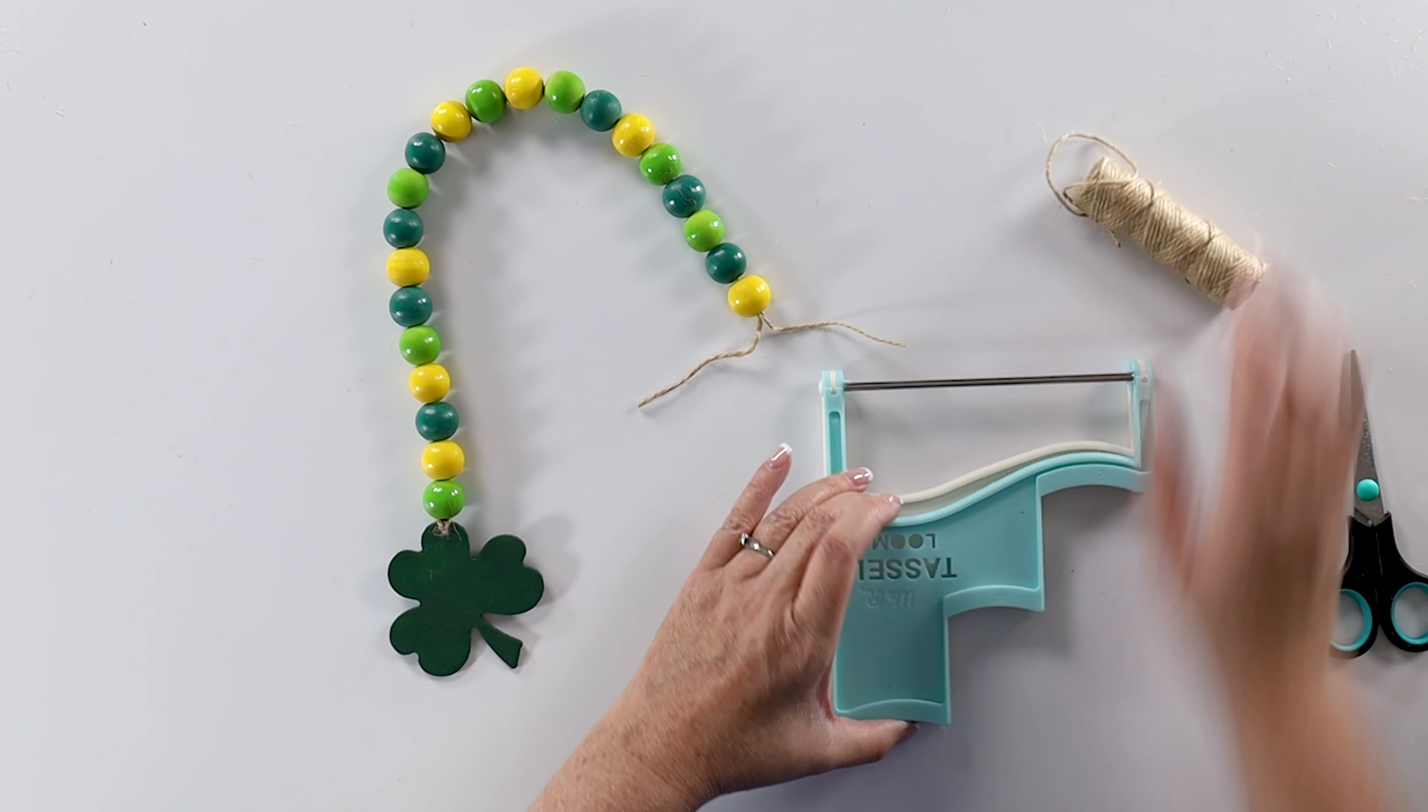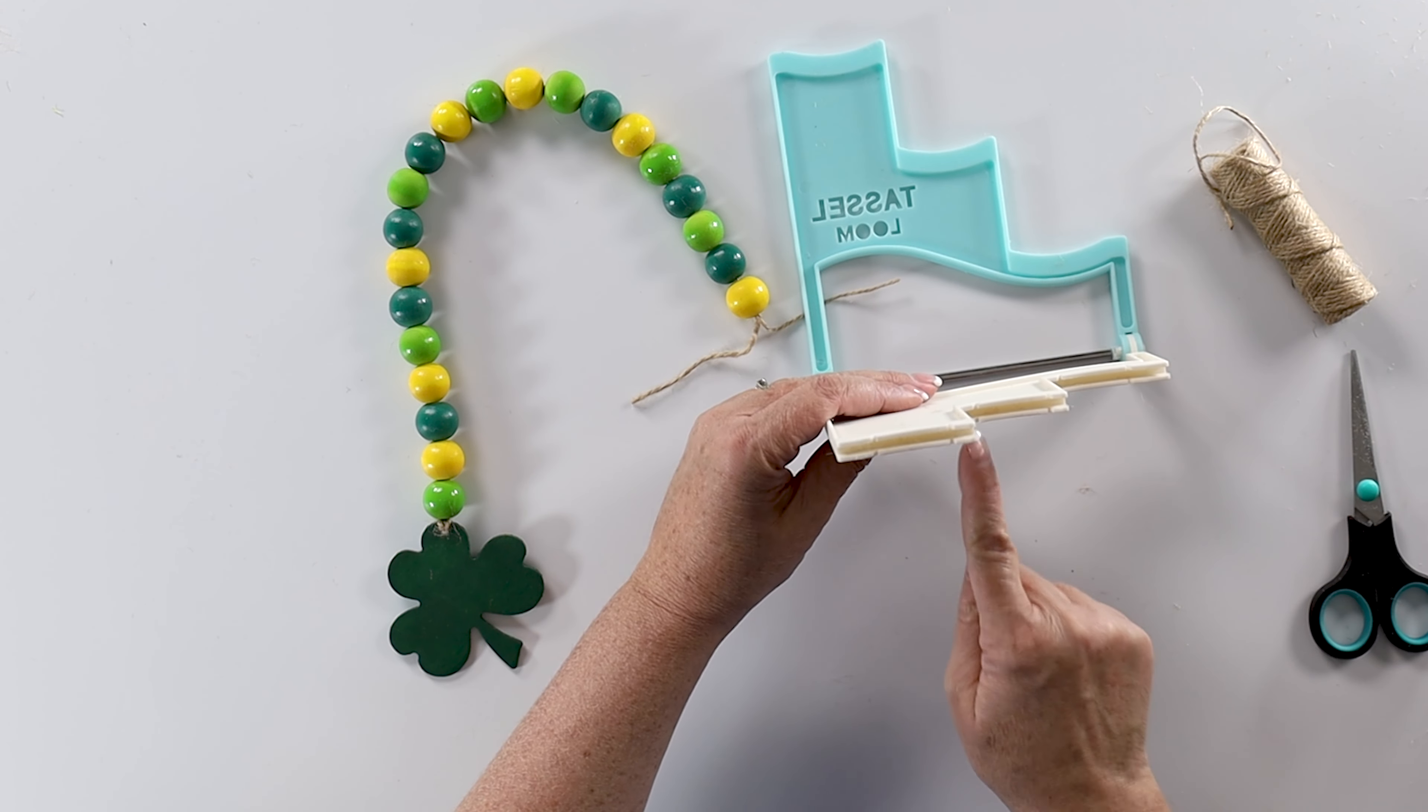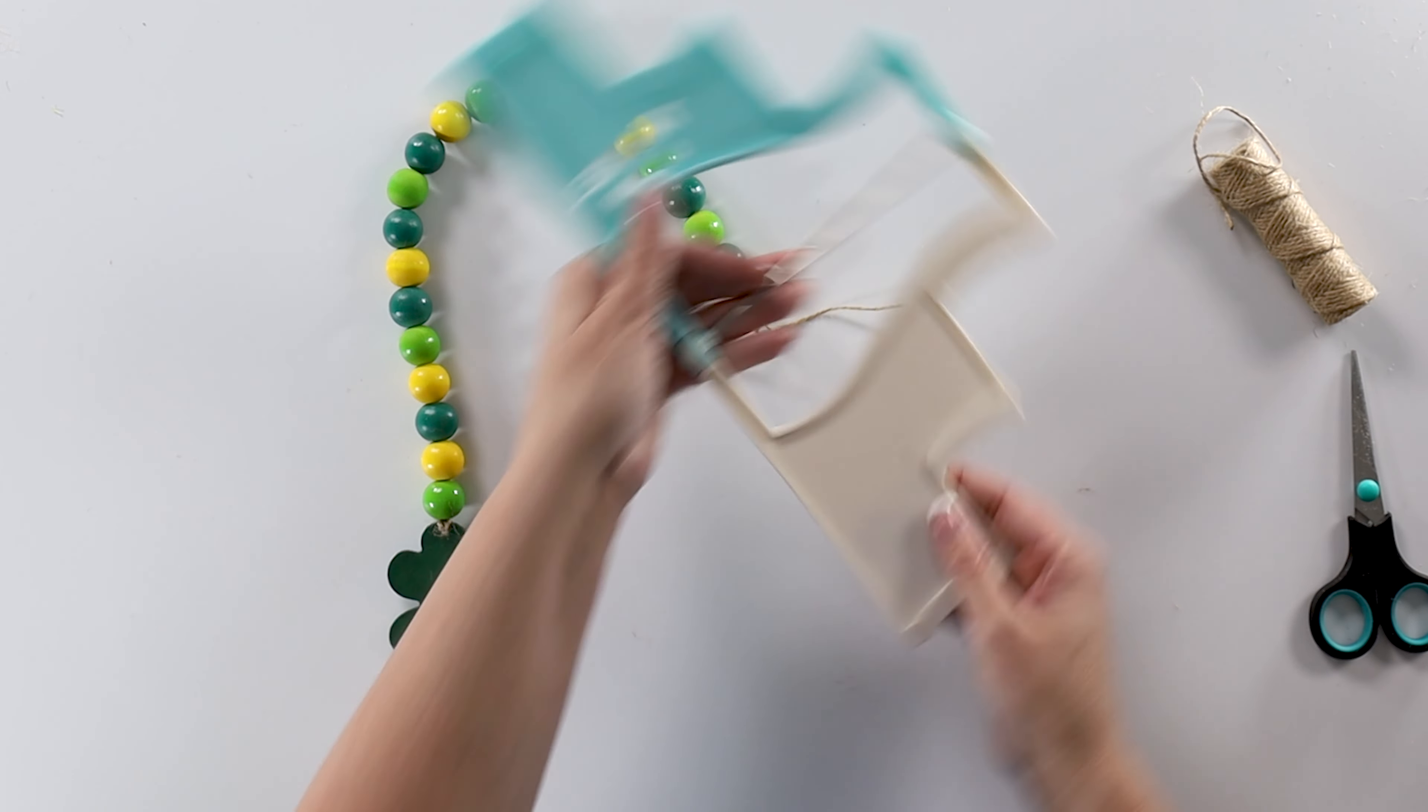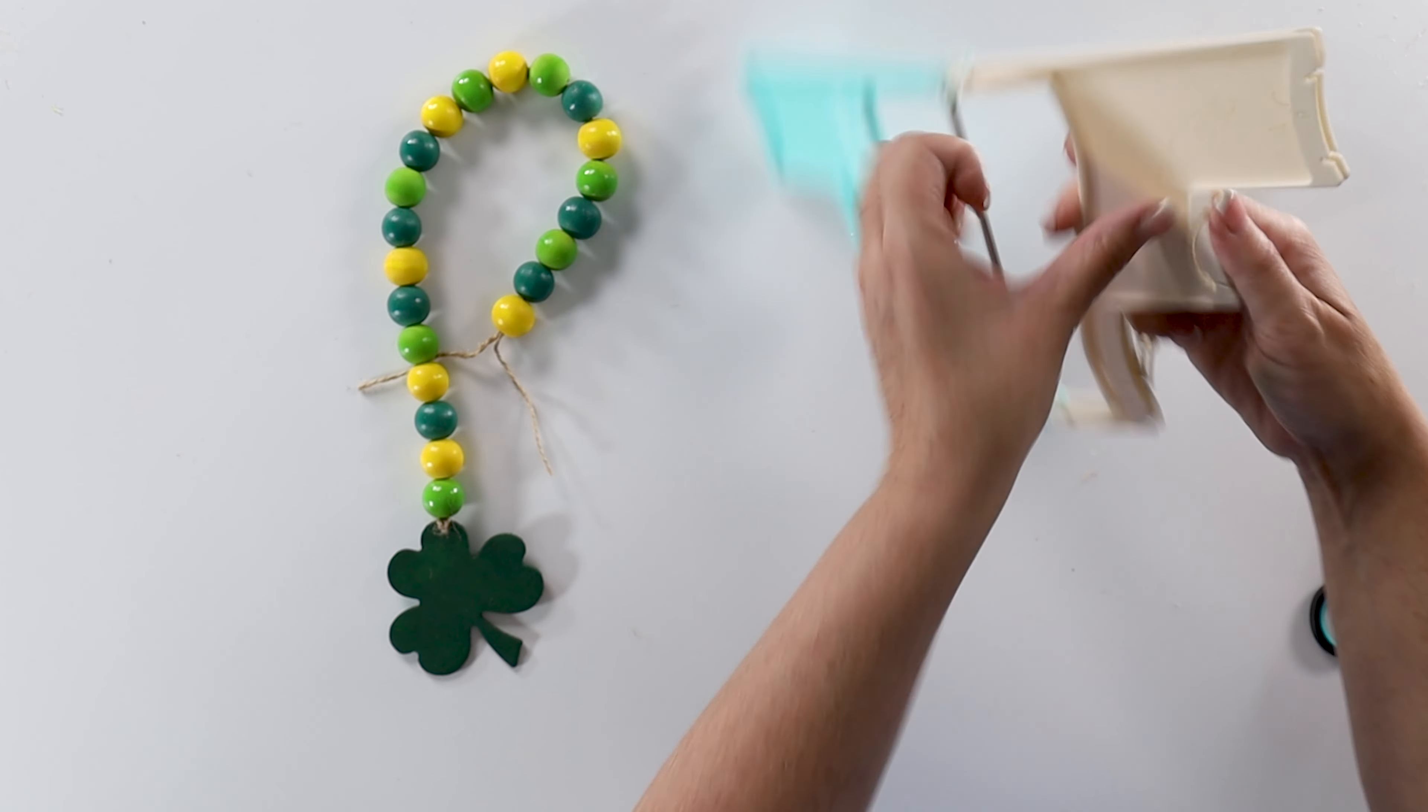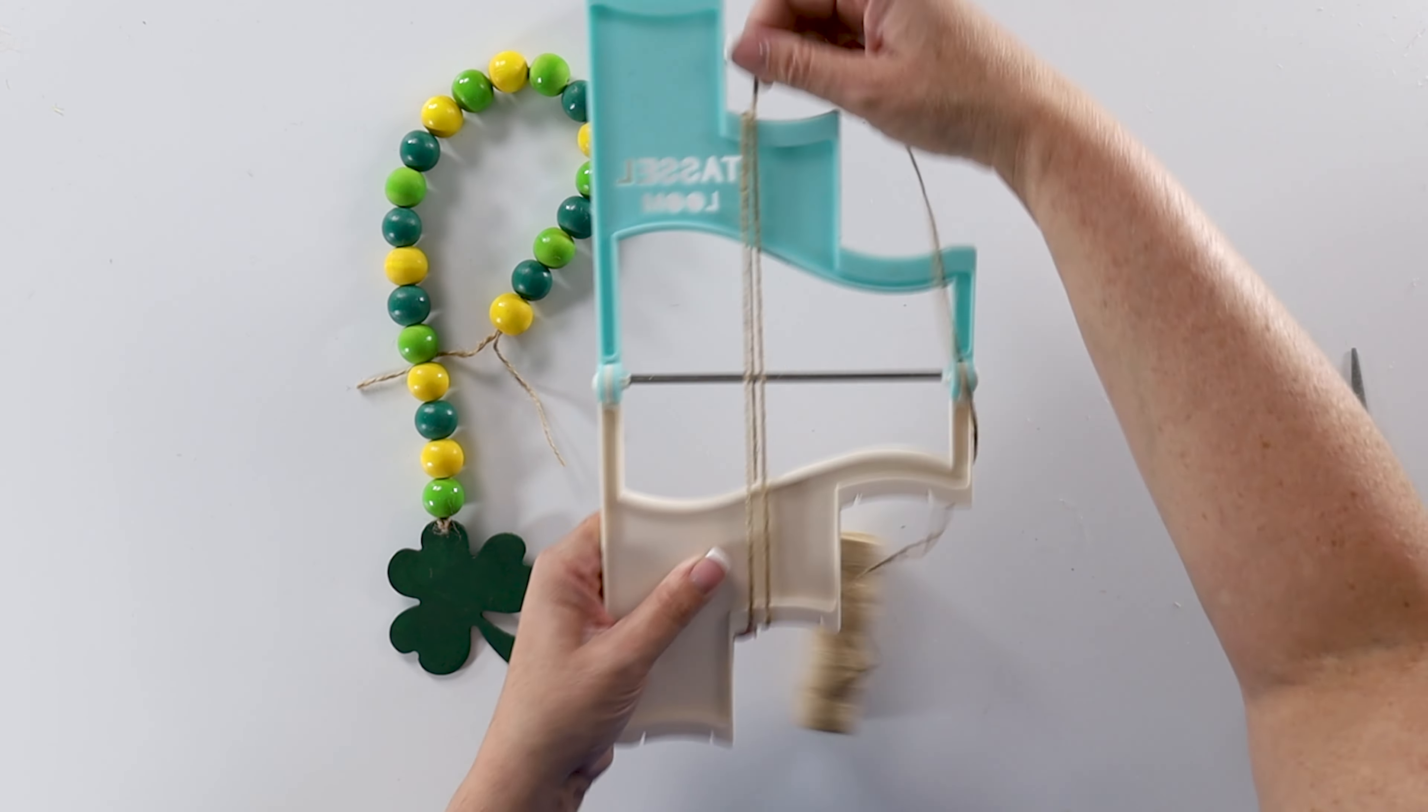Now we can make our tassel using our tassel loom. And I'm going to open that up. We're going to be using this middle one, the four inch tassel. And you can see here on the bottom, there are two grooves. So one's a starting groove and one is an ending groove. We're going to take our twine, put it through that first groove. And then I can just hold it on the back with my thumb or finger as I wrap my twine around that.